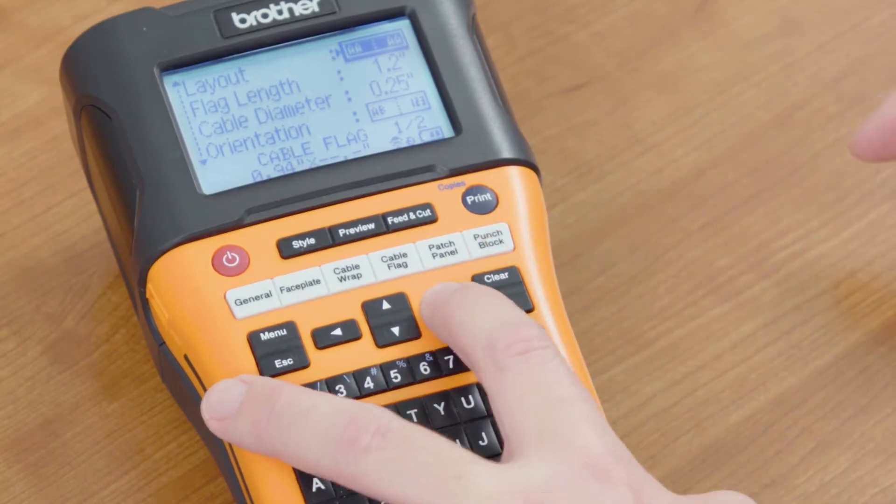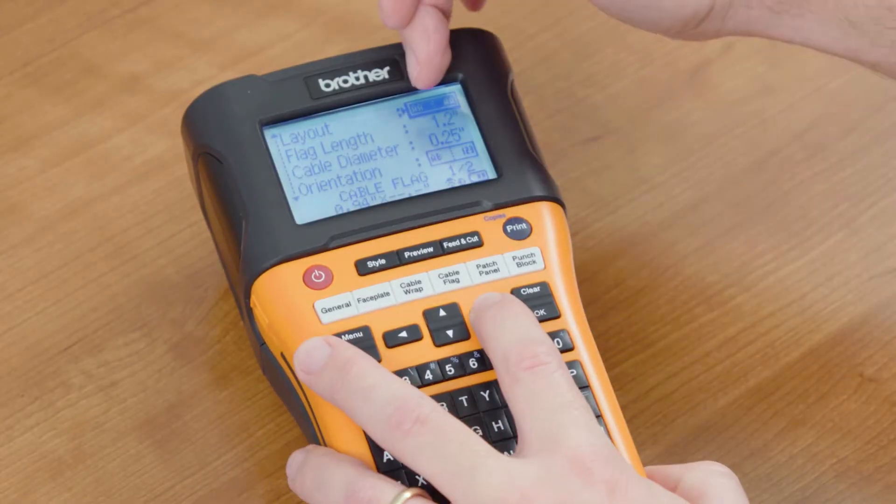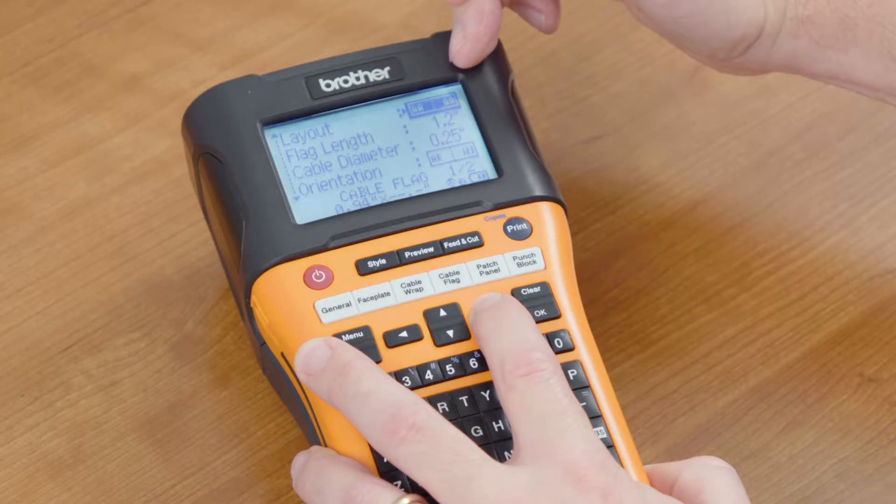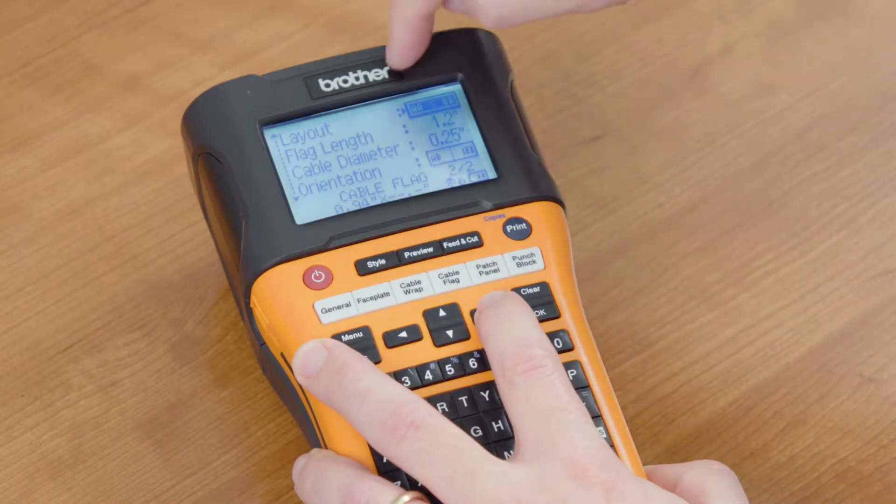What kind of layout do we want? The first one is layout. Layout asks do we want the same information on both sides of the cable flag or do we want it to have different information. Here, it's AABB.